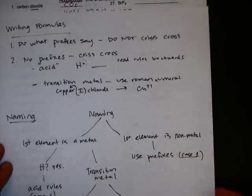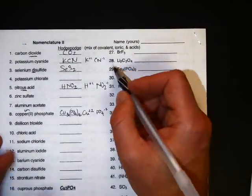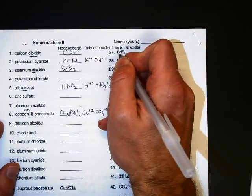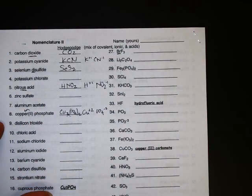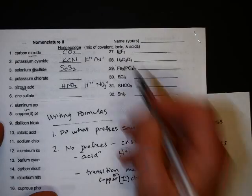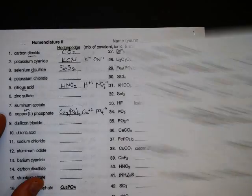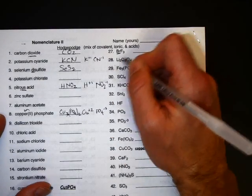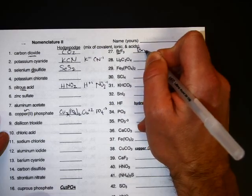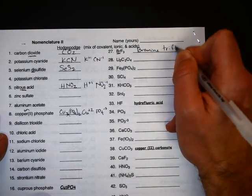So we'll look at a couple and kind of go through it. So let's start here, 27. 27 is BrF3. So really when you do these, it's about the first element. Is that first element a metal or a non-metal? And the first element is bromine, which is a non-metal. So I should use prefixes to name it. So one bromine, but it's the first one so you don't use mono, so it's bromine. And then three fluorines would be trifluoride.